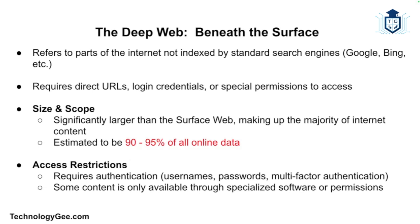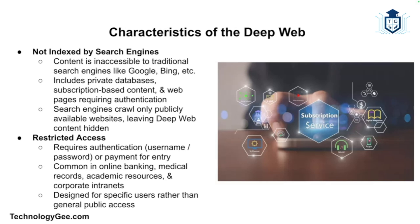The deep web is the part of the internet that is not indexed by search engines and is therefore not accessible through standard search queries. It is much larger than the surface web and contains a vast amount of information not meant for public consumption. The deep web includes content hidden behind paywalls, login forms, and other access restrictions. It is composed of content that search engines cannot or do not index.